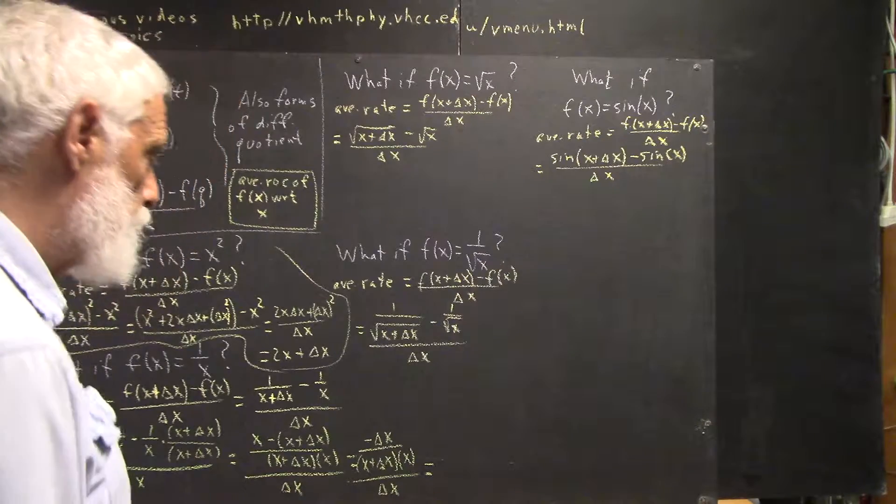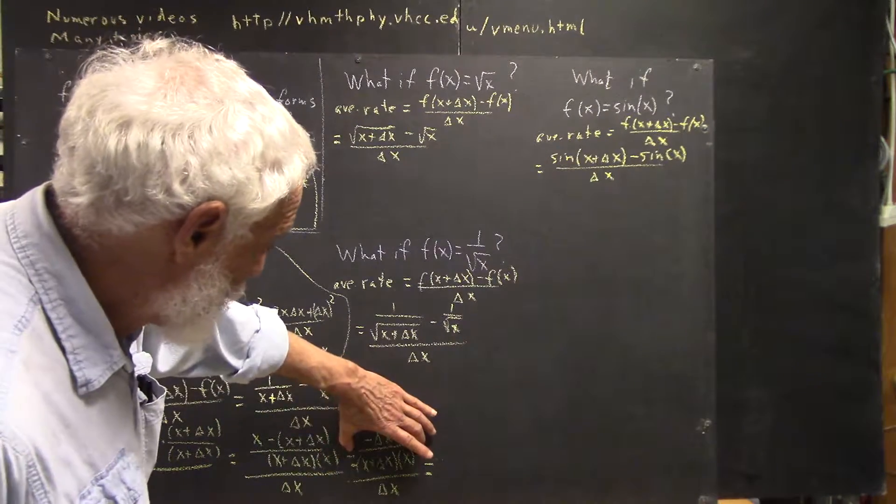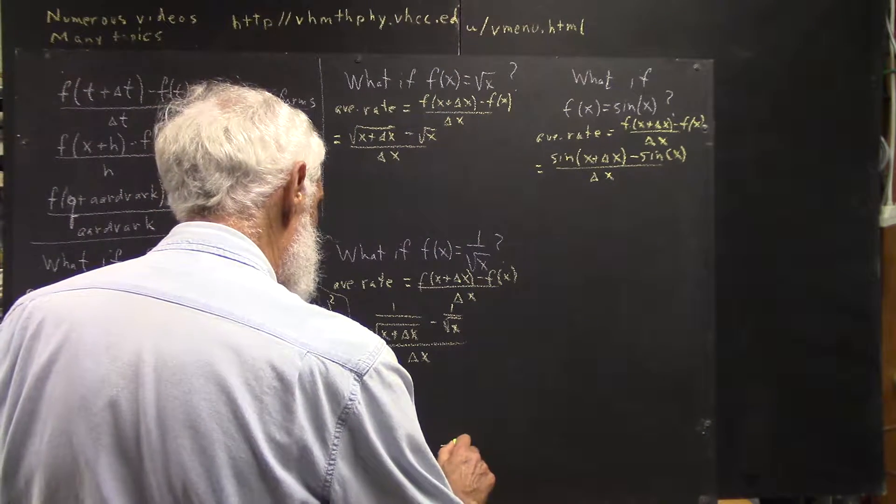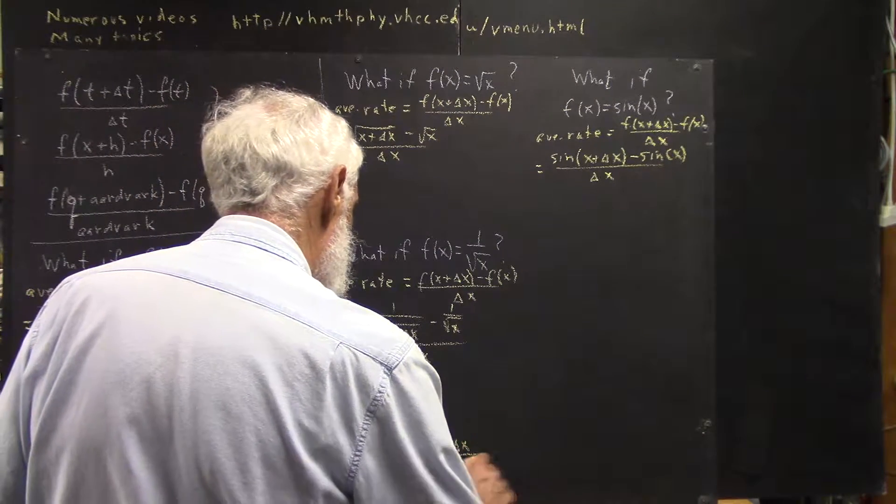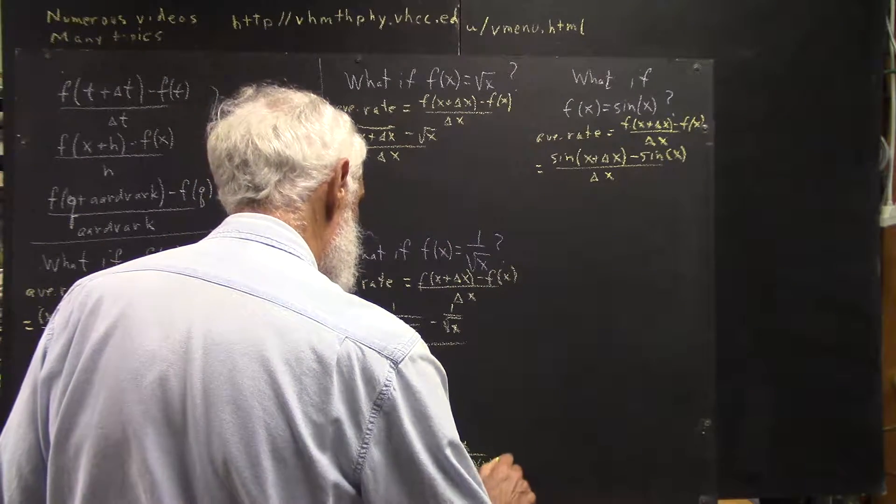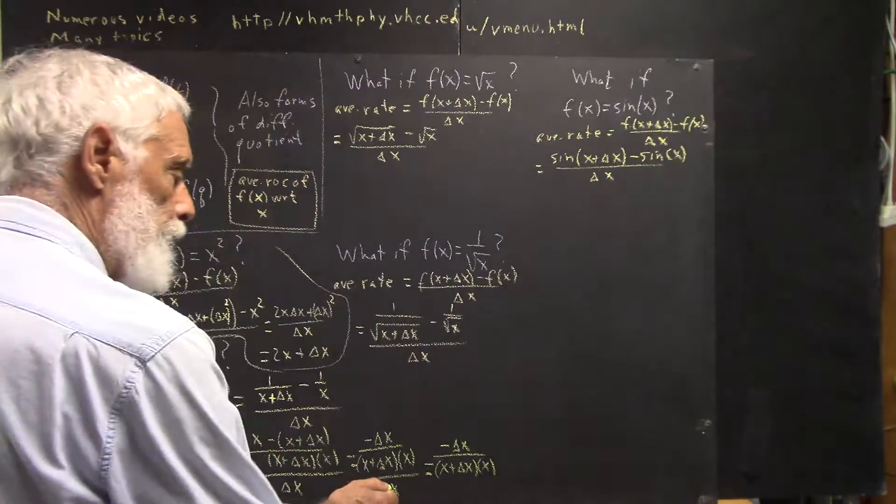What I've got here is a complex fraction that means this divided by this. So that means negative delta x over x plus delta x times x, divided by delta x.